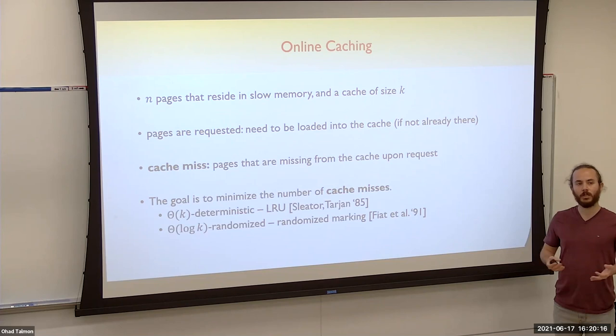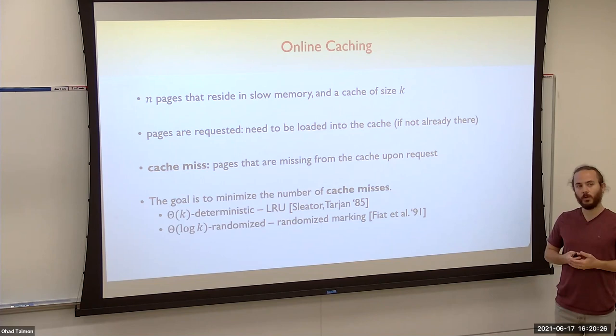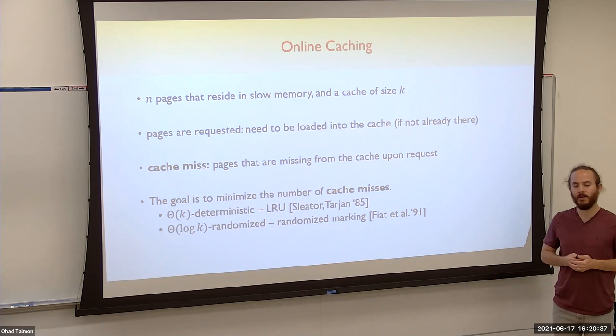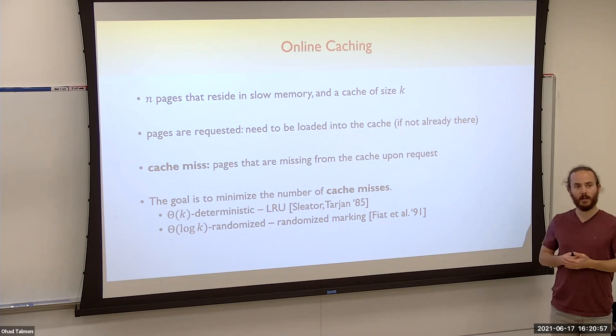First, let's start with online caching. Online caching is an extensively studied problem in the field of online algorithms. In this problem we have n pages that reside in slow memory and a fast memory of size k, which is the cache. We have a request sequence and each sequence contains a lot of page requests. In order to serve the request, we need to have the page correctly requested in the cache at the time it is requested. The measure of how an algorithm for the problem works is by counting cache misses — when a page is missing from the cache and is requested in the sequence.